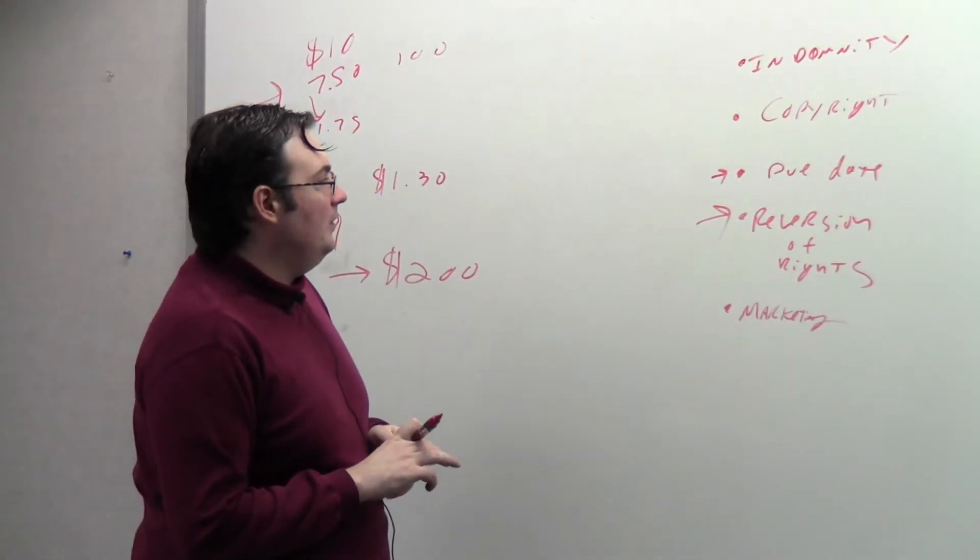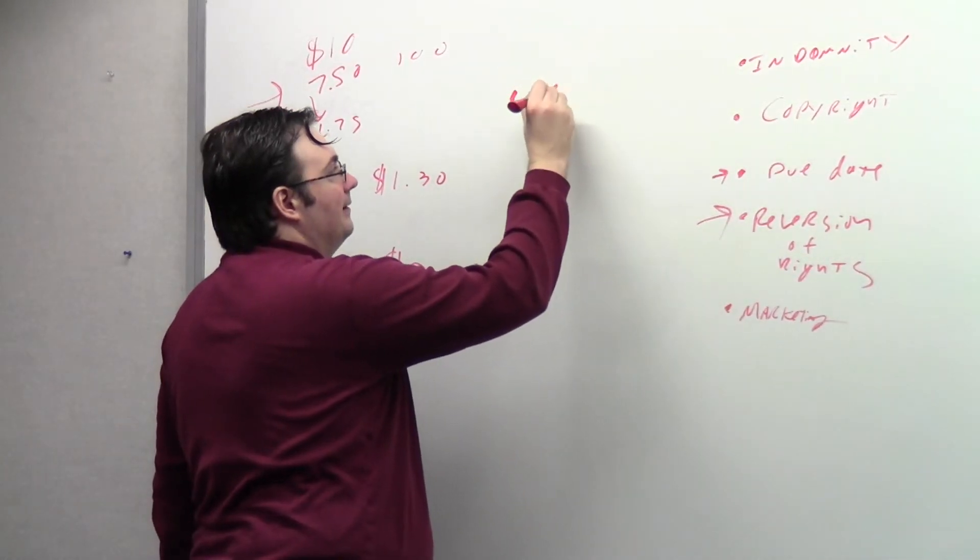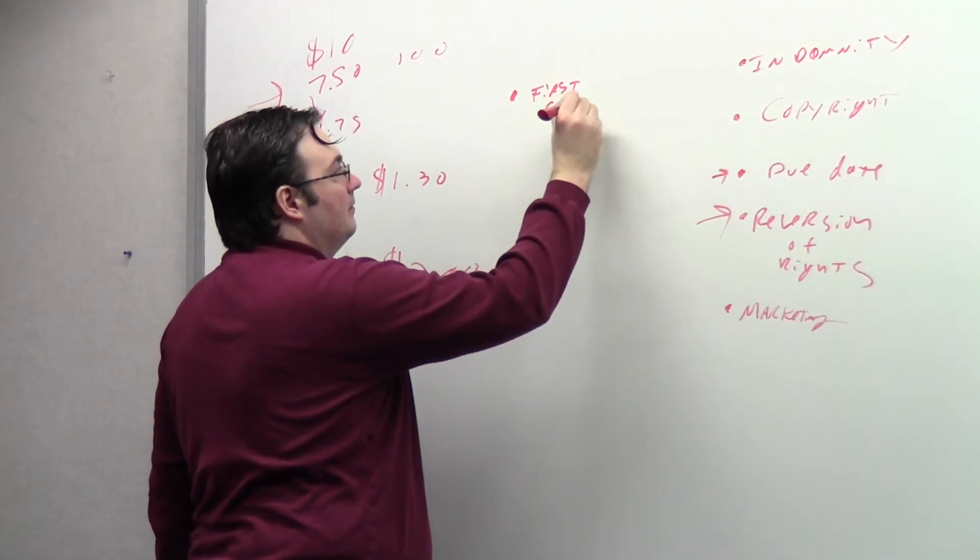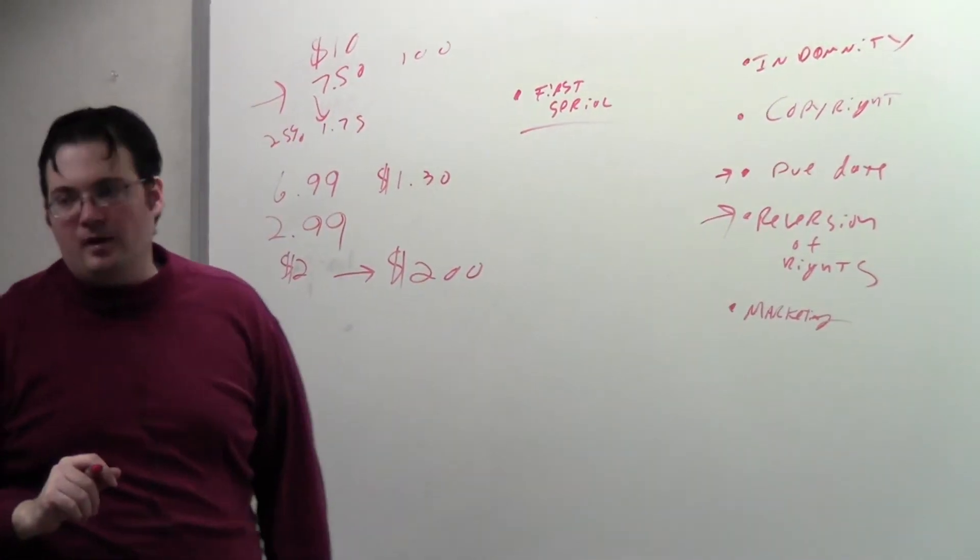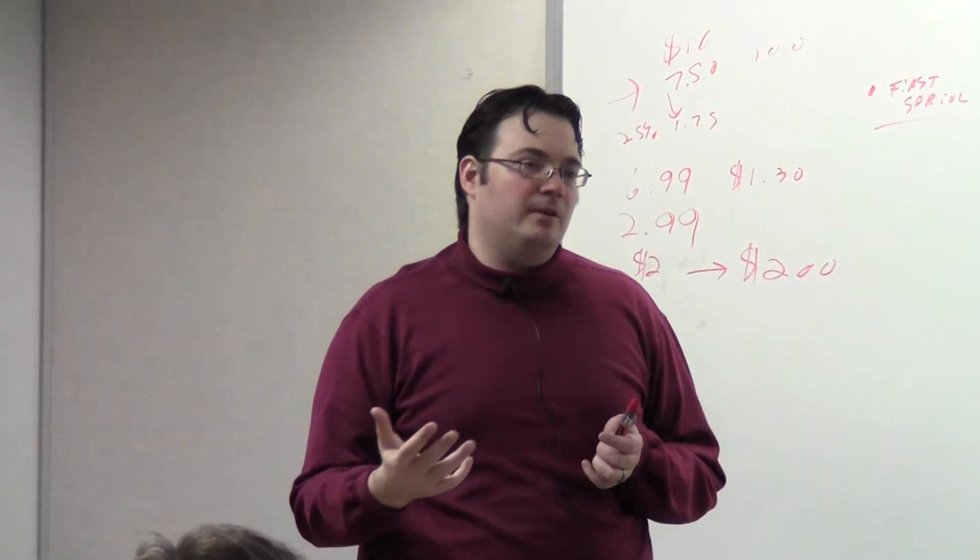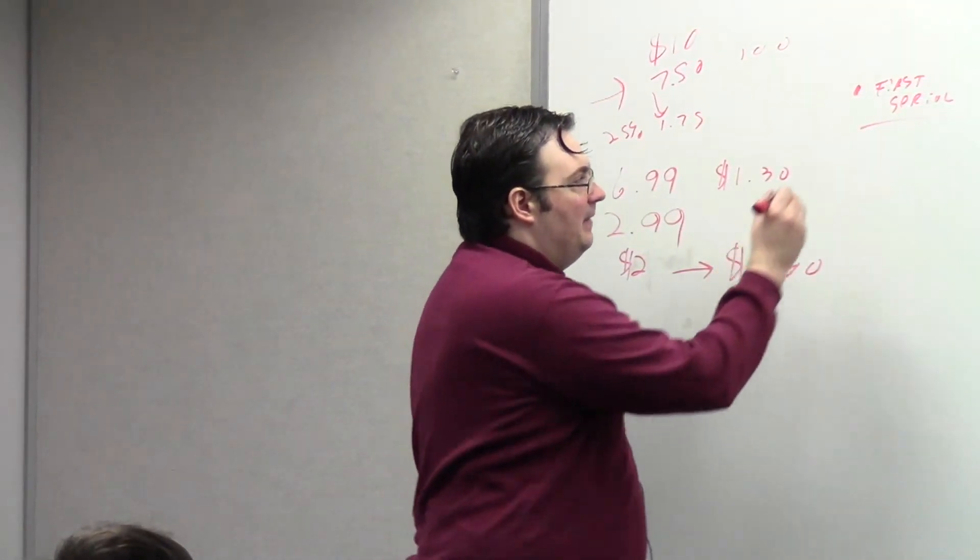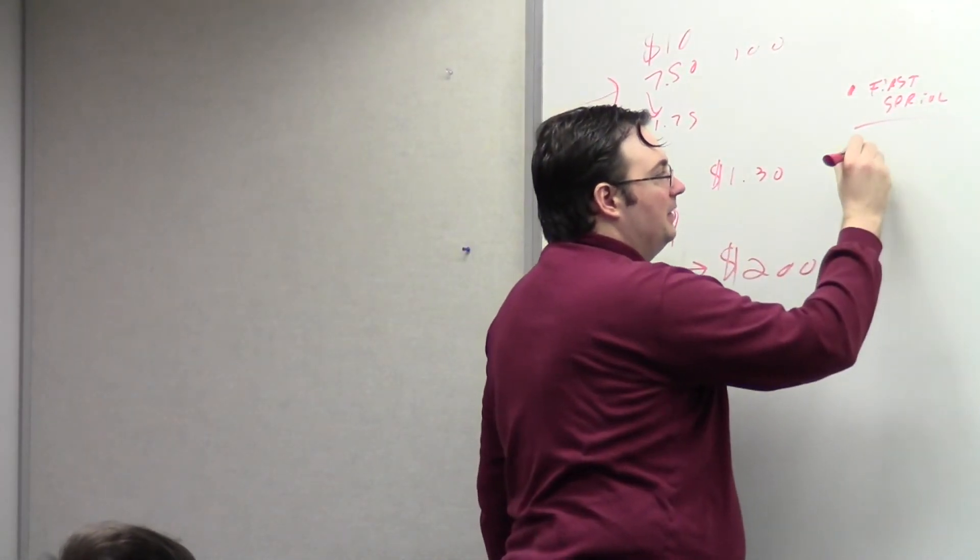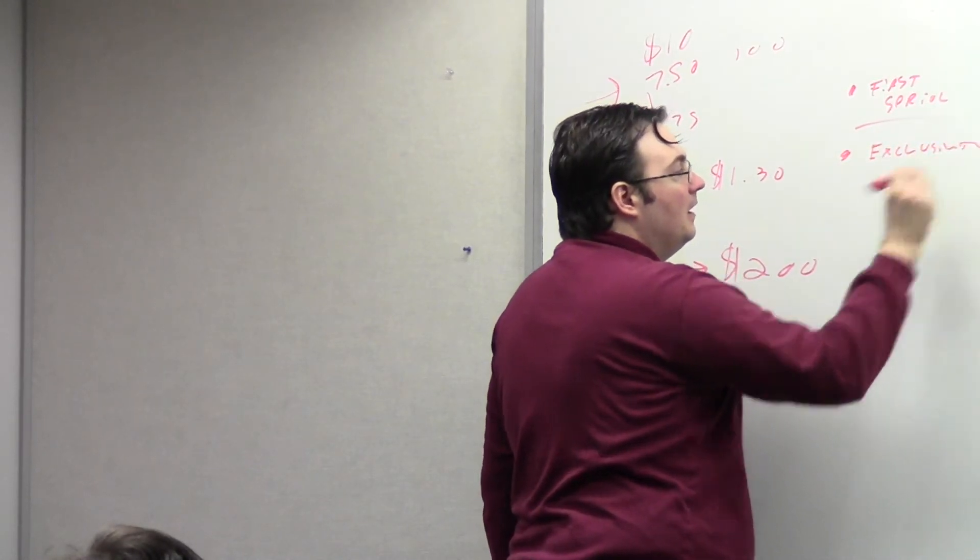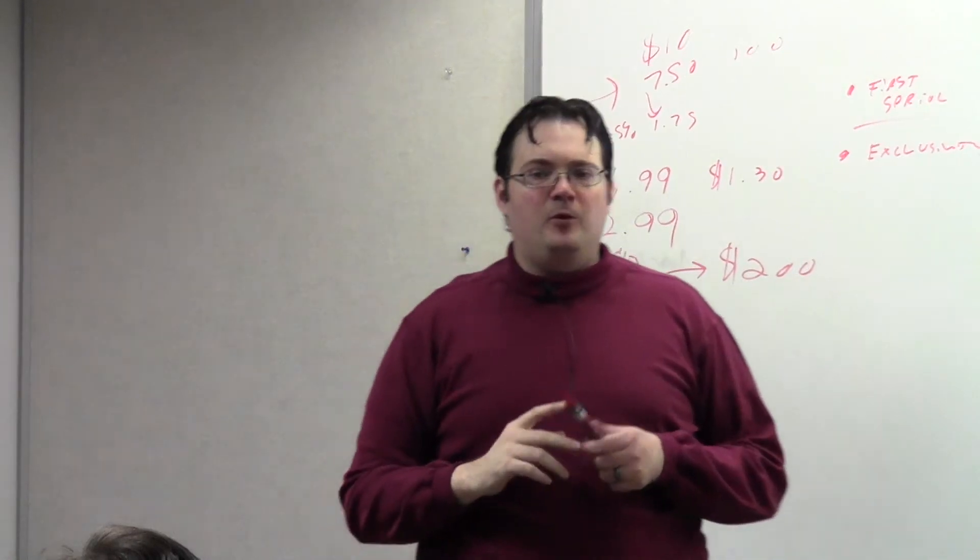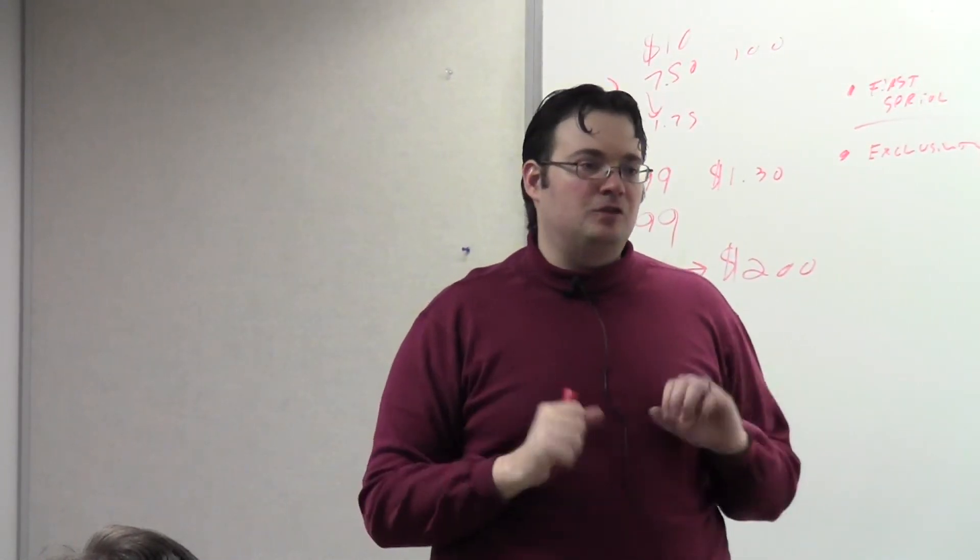A few things on short story contracts, just in case you're interested. Usually what they're buying is first serial rights. It could say first North American serial rights. It could say first World English serial rights. Basically, they get a chance to publish it in their magazine first. And then they will usually have an exclusivity period.